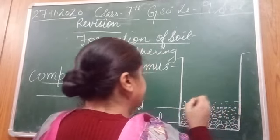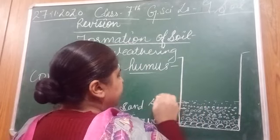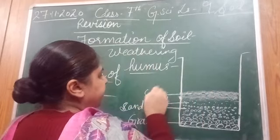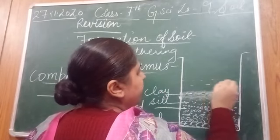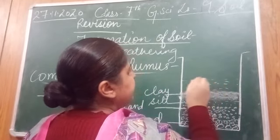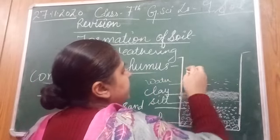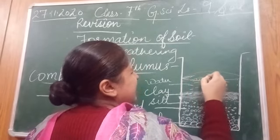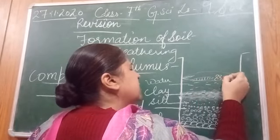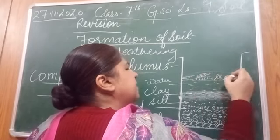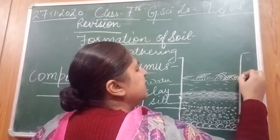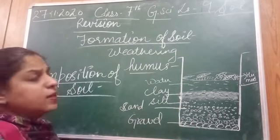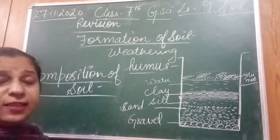Above silt there is a layer of clay — sticky particles. Then above clay there is a layer of water. Above the water there is a layer of humus, showing dead plants and animals and other organic things that add fertility to the soil. This is the composition of soil.